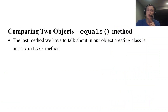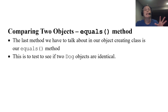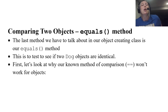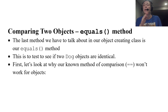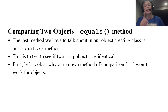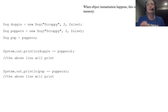The equals method is created to compare two of the same object — to test whether two Dog objects are identical in their instance variables. We do have a way to compare values, which is the double-equals operator. We've seen that with if-statements and loops, but this is why it's not going to work properly for objects.